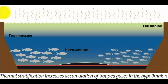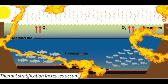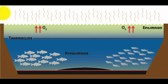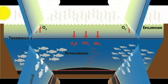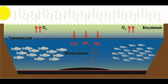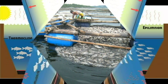Thermal stratification exists in an aquatic environment. It is the condition where different temperatures are observed on the different layers of the pond. At this condition, a physical barrier is created, thus dissolved oxygen cannot be transferred into deeper areas. It increases accumulation of trapped gases in the hypolimnion, including carbon dioxide at a more significant amount.